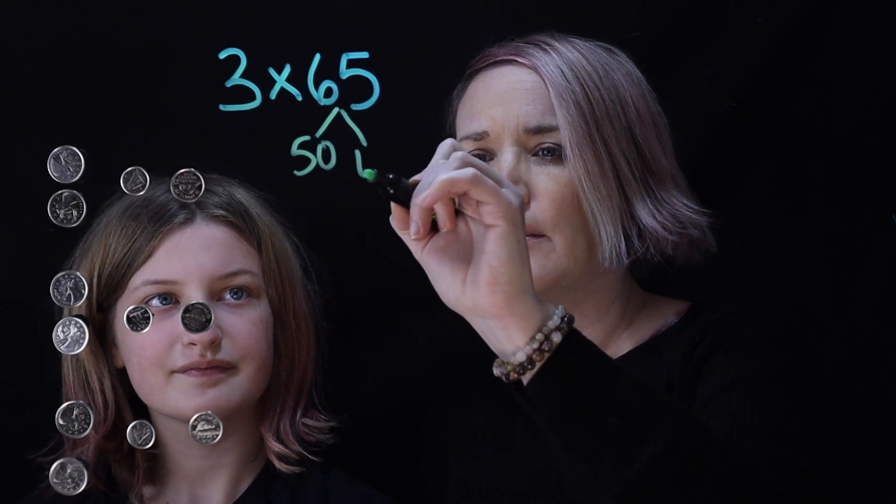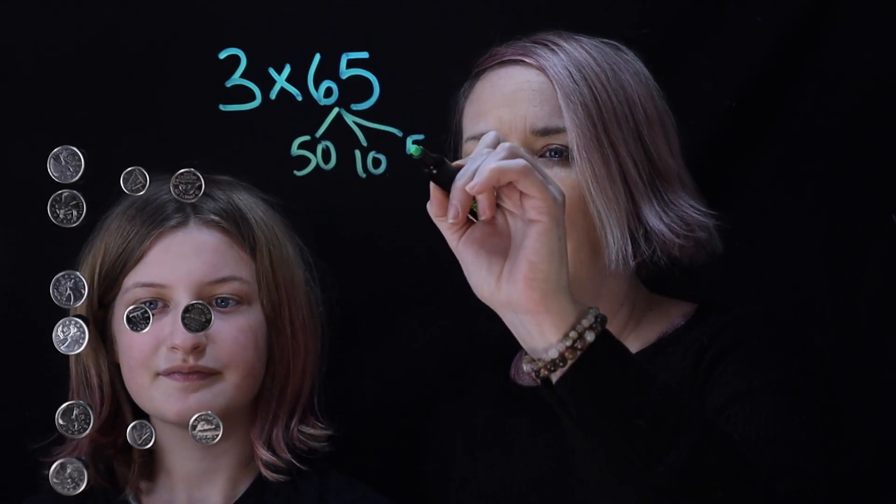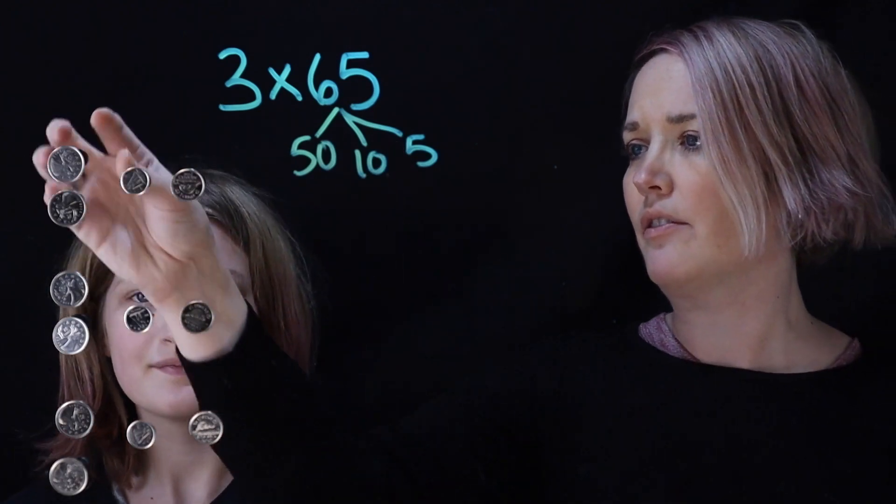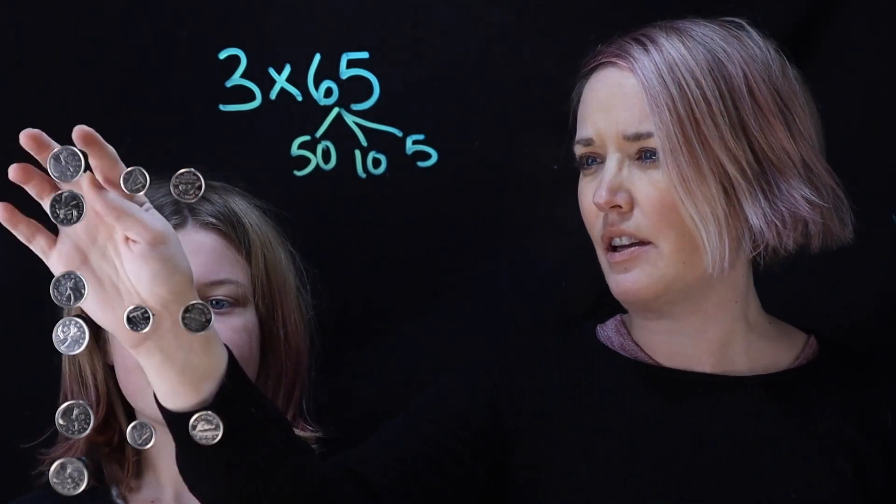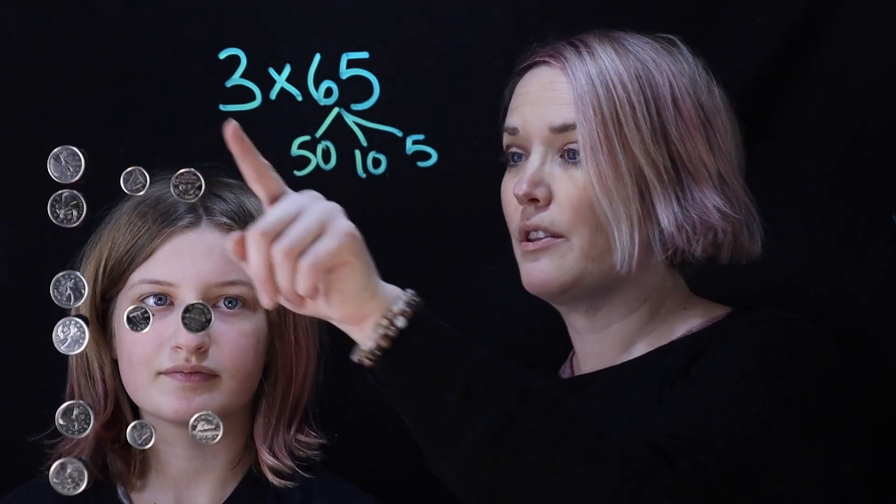So here's 65 cents and Anna you told me you like to think of it as 50 cents and then 10 more would give you 60 and five more would give you 65. Yeah so I'm going to split the 65 into 50, 10, and 5. Okay so let's write that down. So 50, 10, and 5. So 50, 60, 65. And we've got three of them.